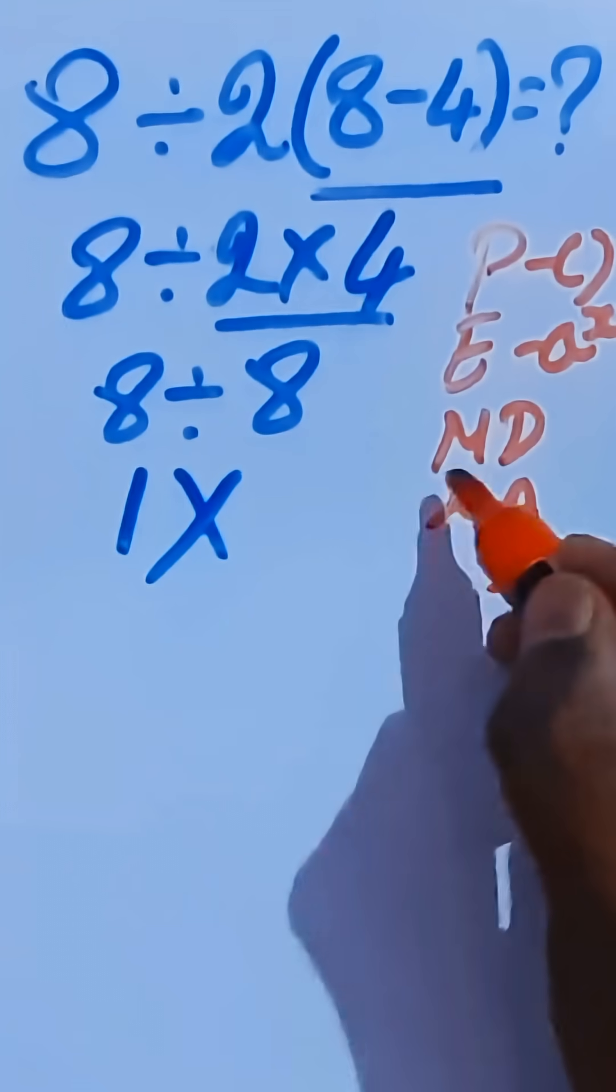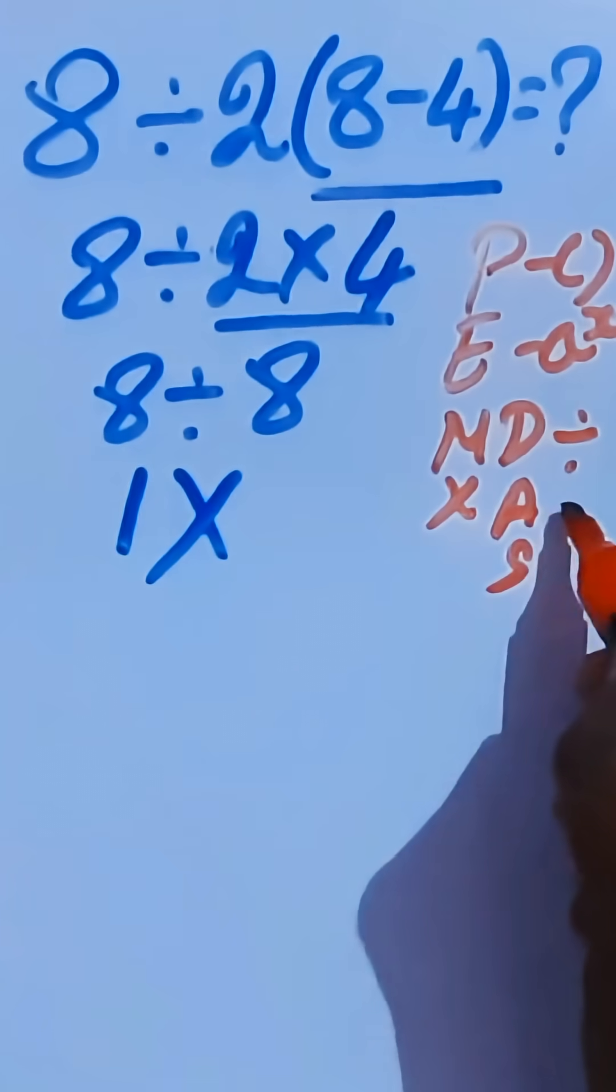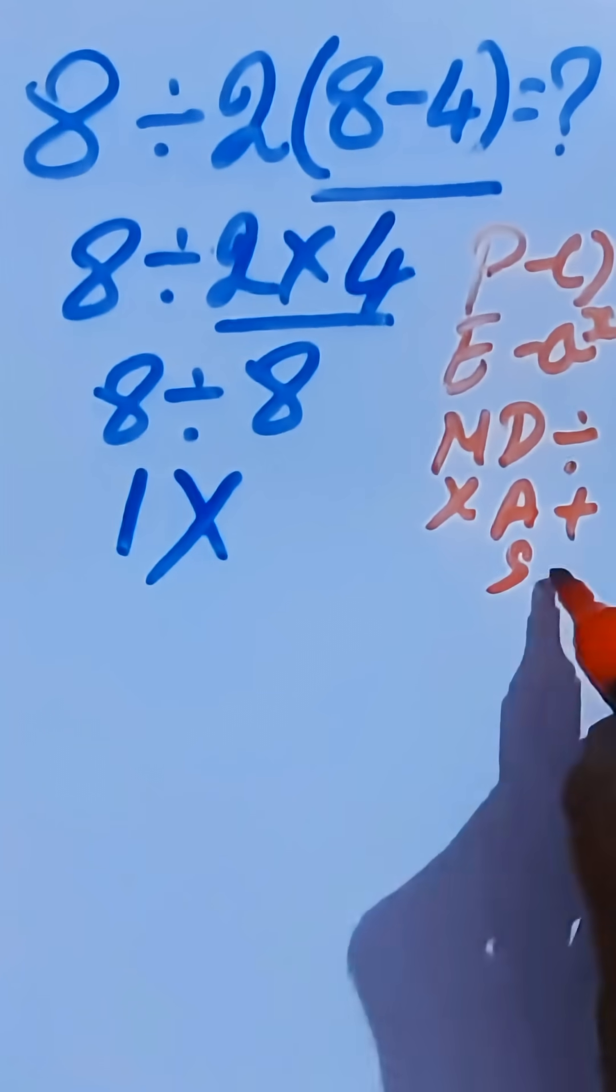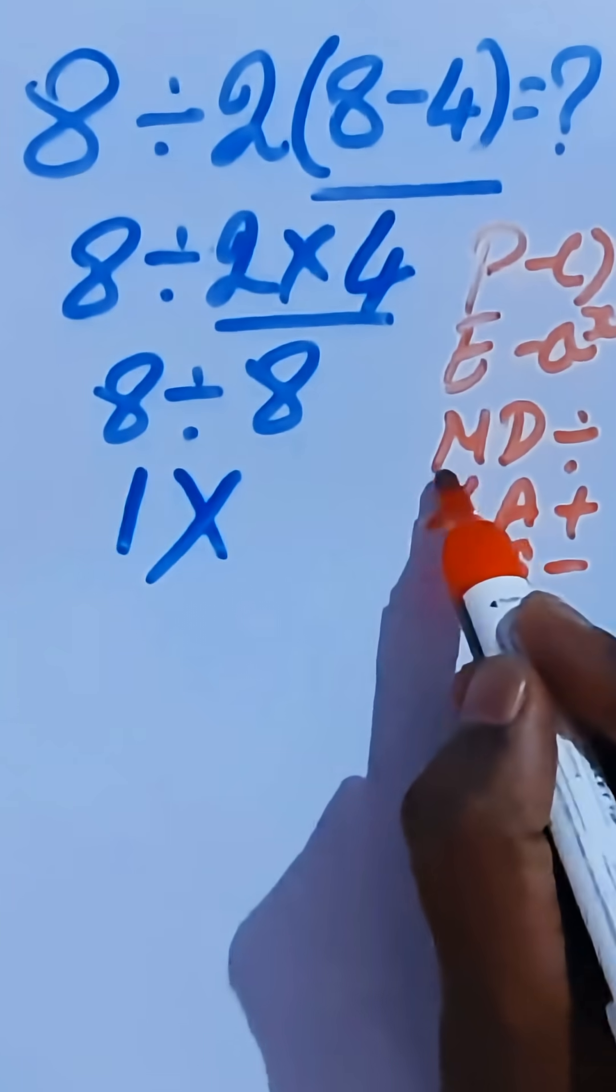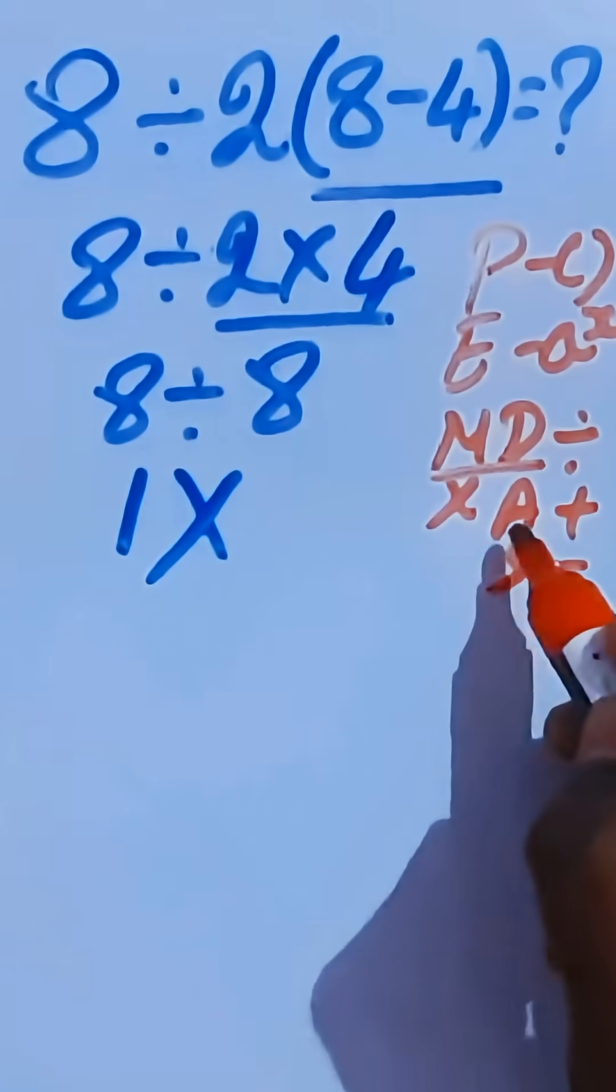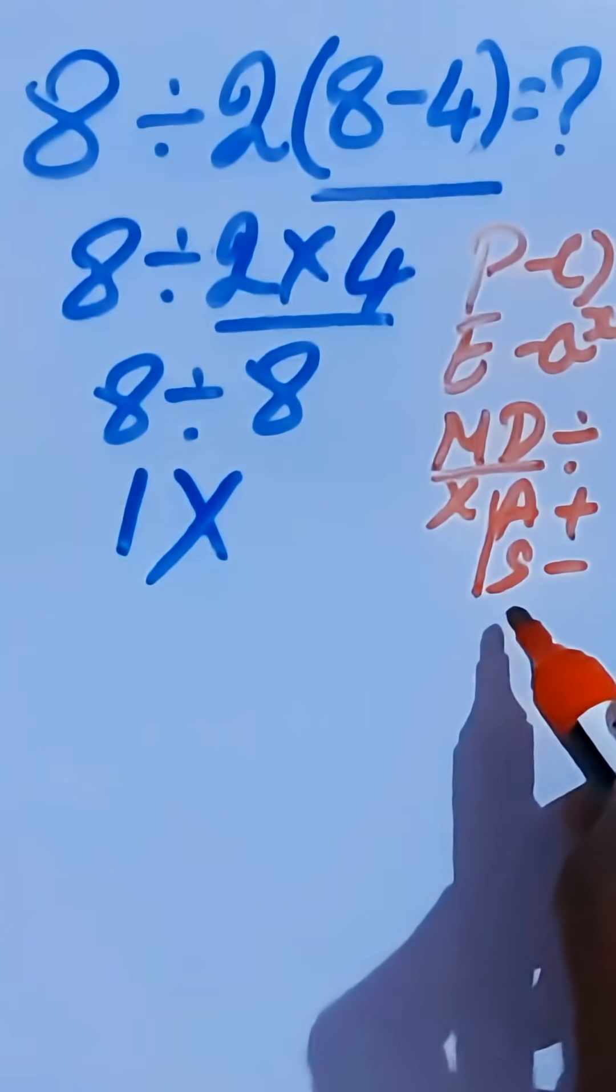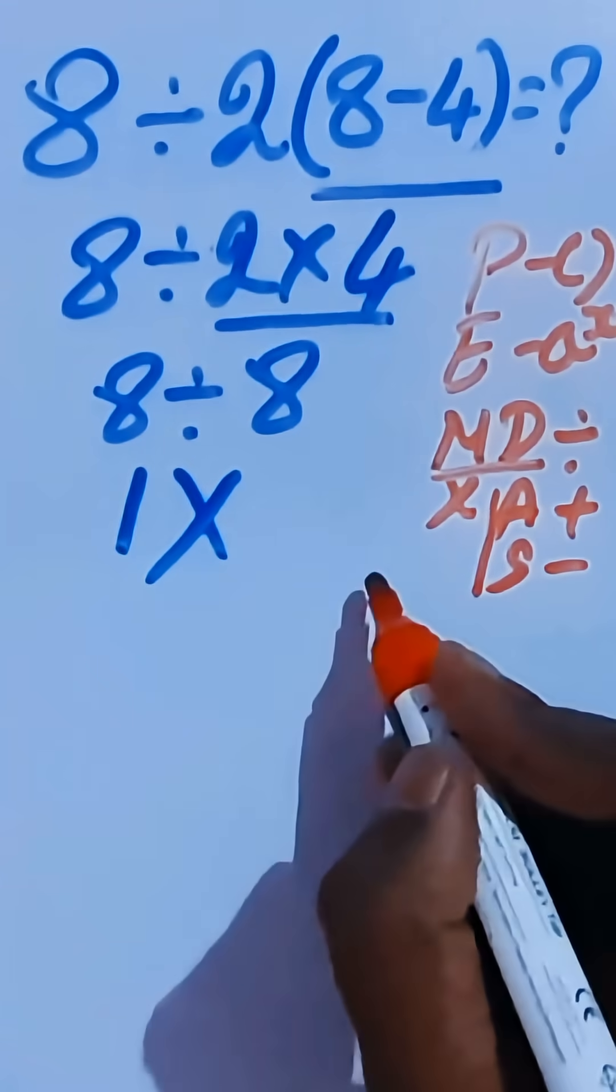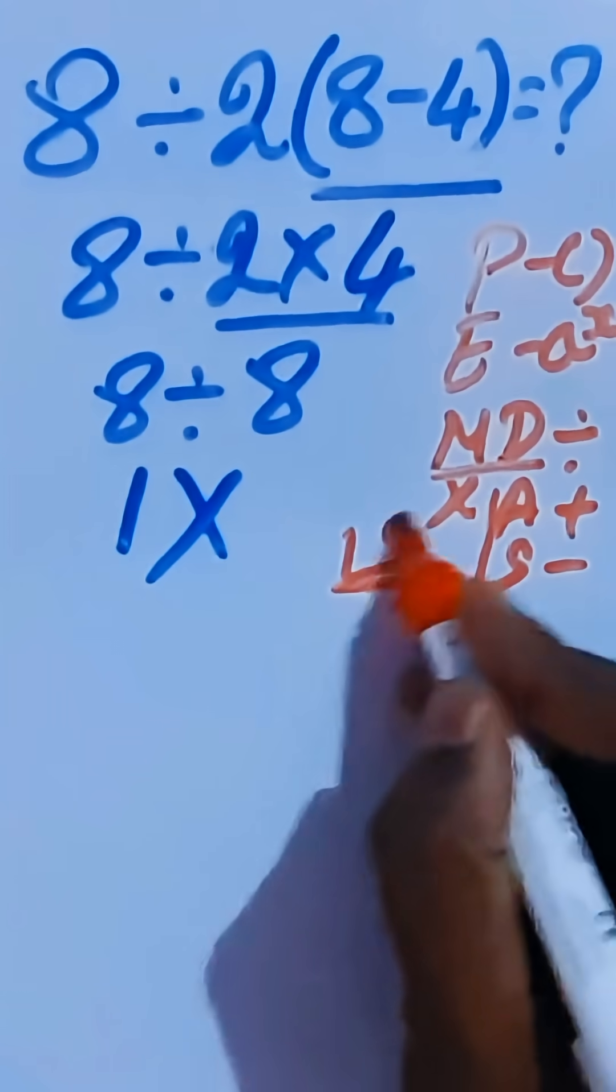We are going to solve this multiplication and division. Here's addition and subtraction. Now, multiplication and division are equal priority. Also, addition and subtraction are equal priority. For this, we have to follow the left-to-right rule in the problem.